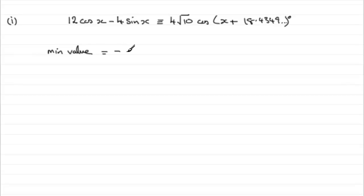Okay, the minimum value is -4√10, or you might have -√160. That will do as well. Yeah, but how did I figure that out?